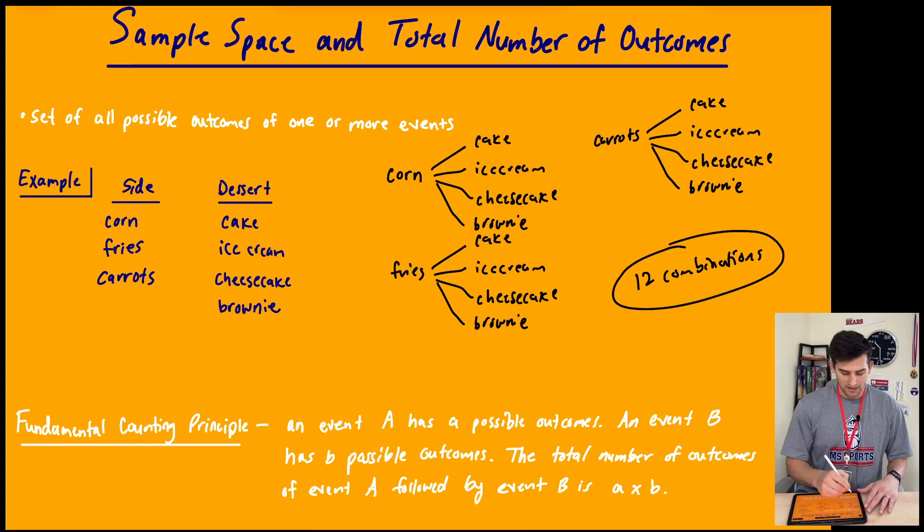Now, how many sides did we have? We had three. How many desserts did we have? We have four. So what do we know about three and four that would give us twelve? Well, three times four is equal to twelve.